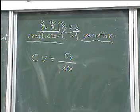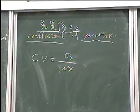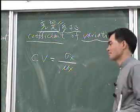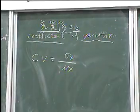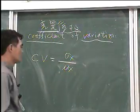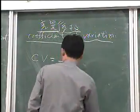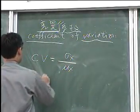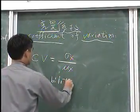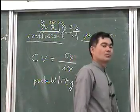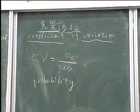We are done with descriptive statistics and now move to Chapter 3: Probability. The study of probability is historically related to gambling.